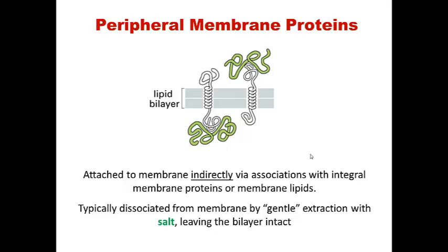In addition to integral membrane proteins, there are also peripheral membrane proteins. These differ from integral membrane proteins because they're not embedded within the membrane. Instead, they're attached to the membrane indirectly via associations with integral membrane proteins themselves, or they can associate with the lipid bilayer directly. Importantly, these proteins tend to associate with the surface of the membrane via hydrogen bonding or ionic bonding, so they can typically be dissociated from the membrane via a gentle extraction with salt, which doesn't disrupt the bilayer itself.